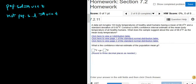It says a data set includes 103 body temperatures. That's going to be the sample size, n, so n is 103, of healthy adult humans having a mean of 98.9 degrees Fahrenheit. That's the sample mean, that comes from the sample, that's x-bar. So x-bar is 98.9.